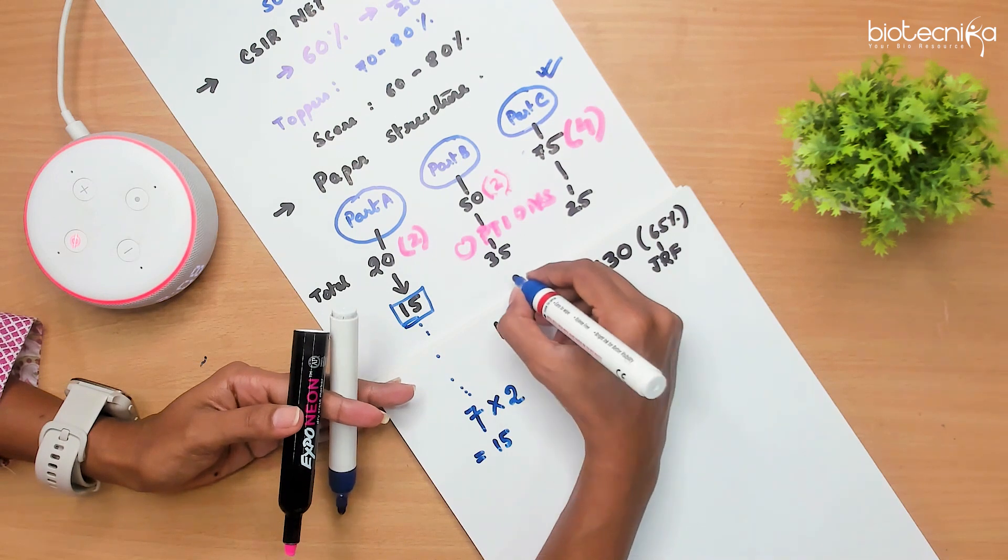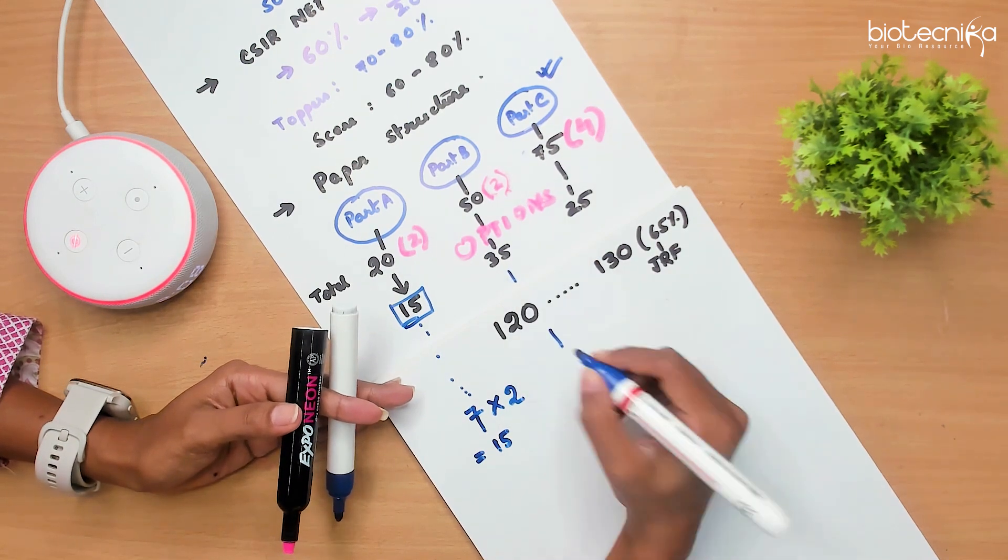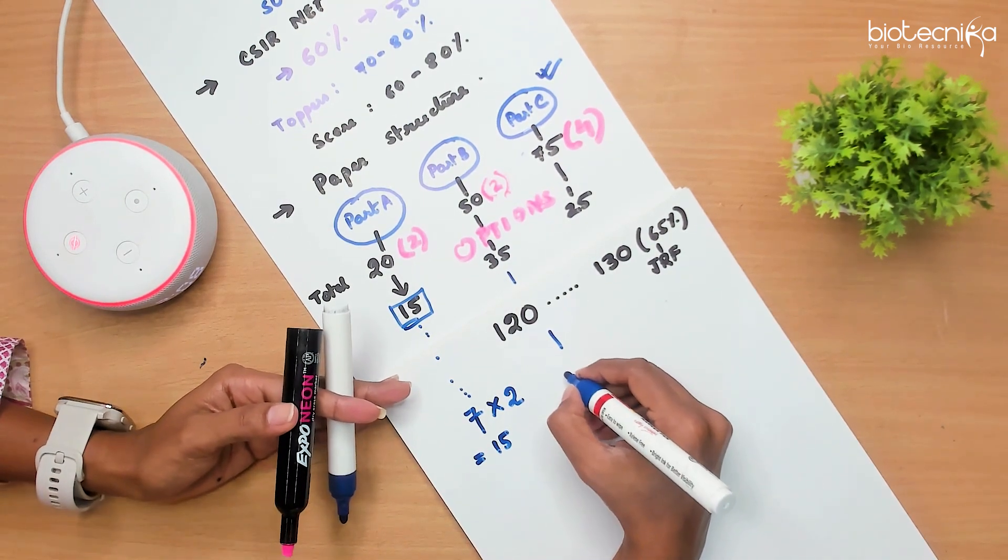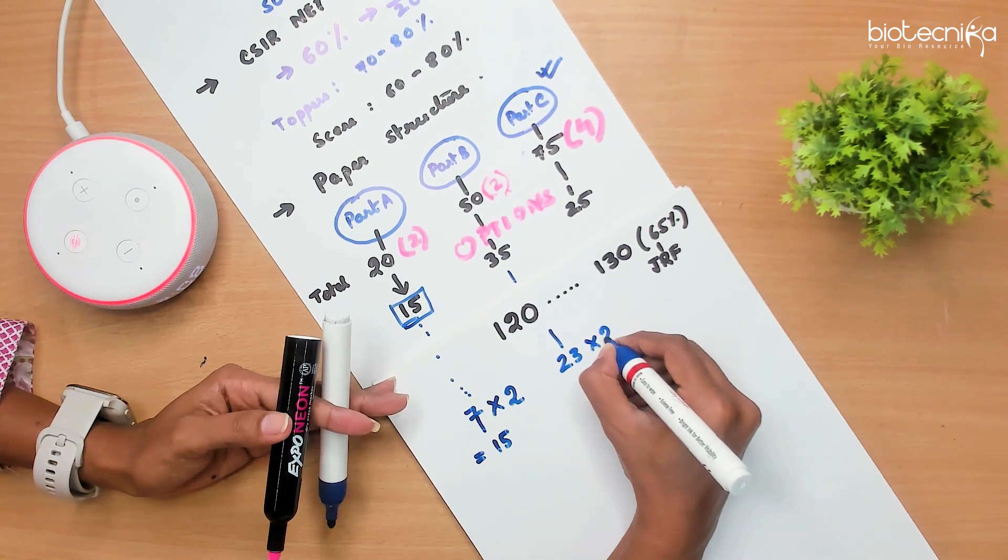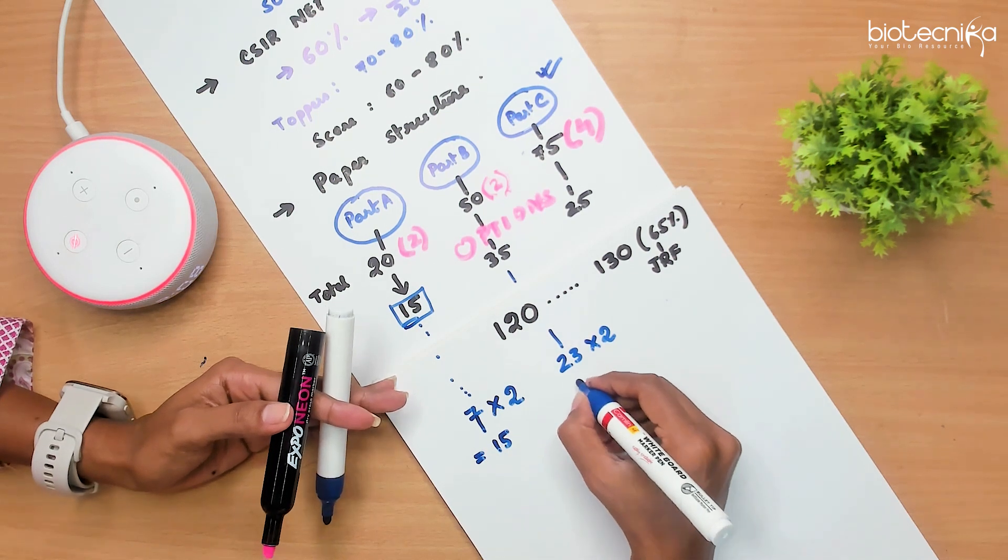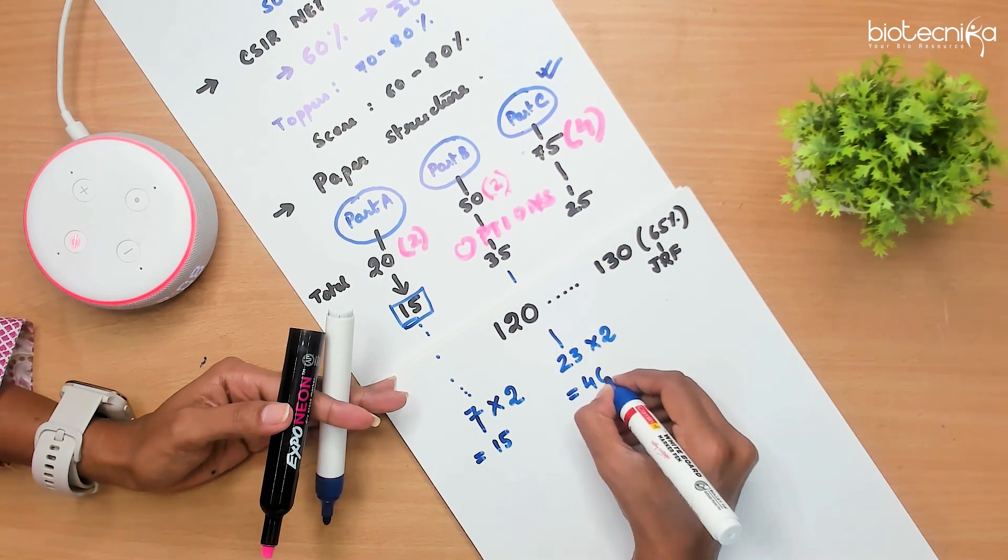Now, under Part B, I am not asking you to solve 35 questions. Just solve some 23 questions. These also has 2 marks each. So, 23 into 2, you will be getting 46 marks.